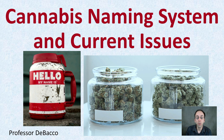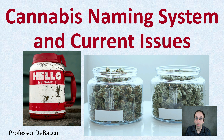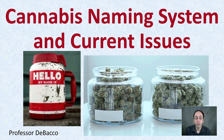Welcome to another Debaco University video. Here we're going to be looking at the cannabis naming system that's currently in place and some of the issues involved with that system when it comes to naming. You can see here some dried flower with name tags that have nothing on them. A lot of times, even though it may say a name on it, we may not have a very valid name, and we'll talk about that here.